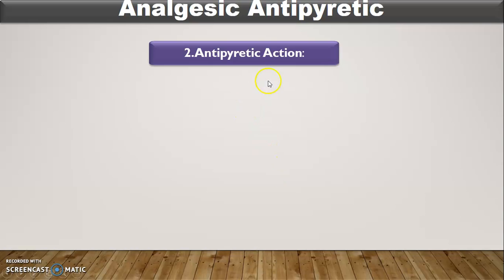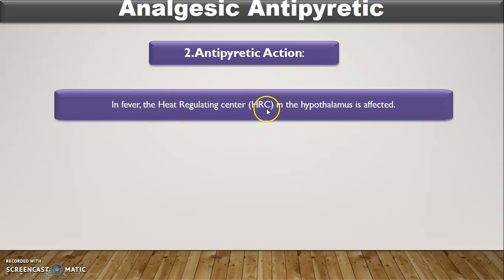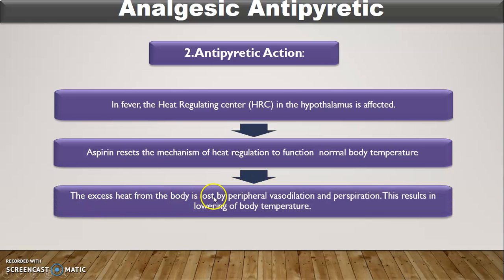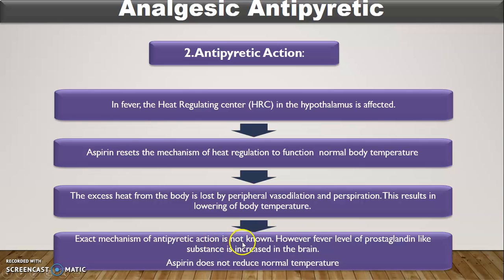Dysmenorrhea is the medical term for pain with menstruation. The next action is antipyretic action. In fever, the heat-regulating center in the hypothalamus is affected. Aspirin resets the mechanism of heat regulation to function at normal body temperature. Excess heat from the body is lost by peripheral vasodilation and perspiration, which means excretion of sweat from the sweat glands, resulting in the lowering of body temperature. The exact mechanism of antipyretic action is not fully known, but lowering the level of prostaglandin-like substances in the brain is why antipyretic action takes place. Aspirin does not reduce normal temperature.